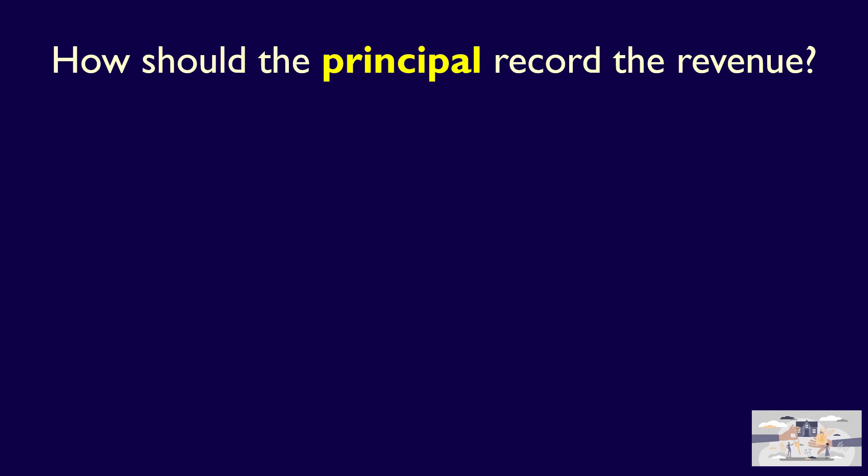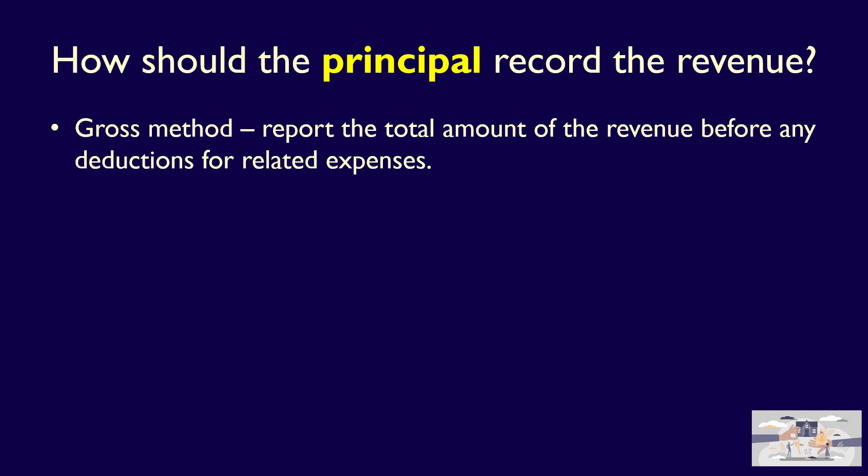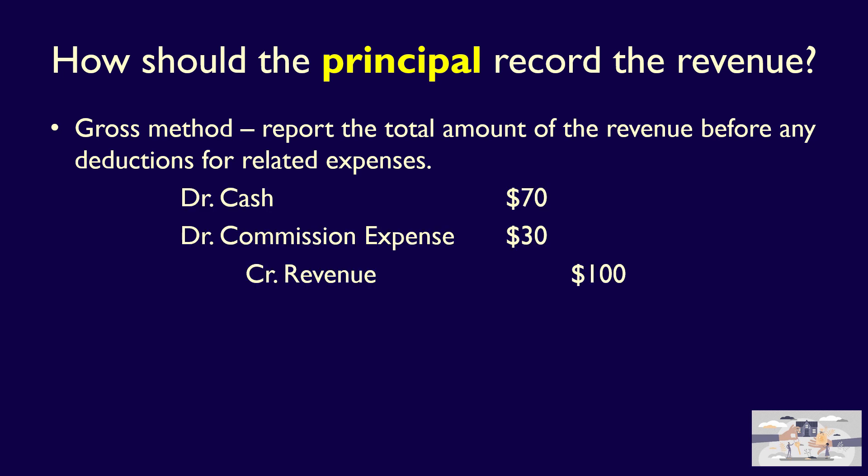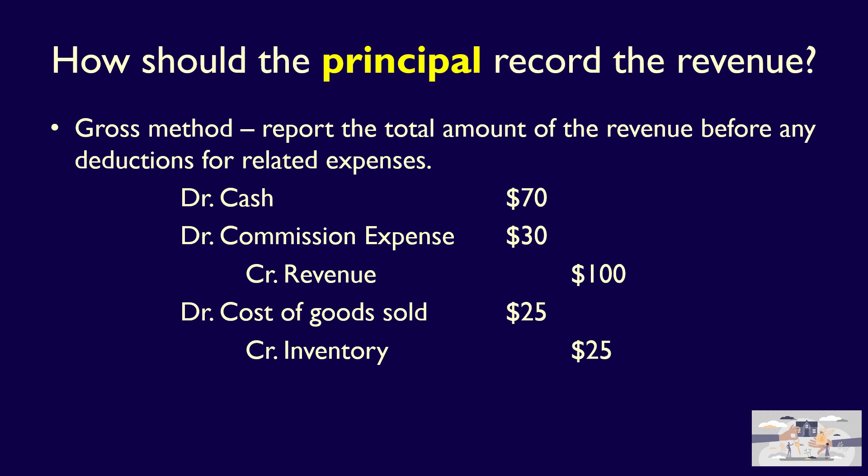How should a principal record their revenue? If an entity is acting as the principal, they must use the gross method to record the sale. Remember that the seller is the principal. They have the inventory risk, they set the price, and they take the credit risk. They bought the desk for $25 and then sold it on MaxSold's site for $100 to a customer, receiving $70 from MaxSold. The seller would debit cash for $70, which they received from MaxSold. They would debit commission expense for the $30 commission that MaxSold kept, and then credit revenue for the full $100. They would also record a debit to cost of goods sold for the $25 paid for the desk and a credit to inventory for the same amount, reducing their inventory because the desk is now gone.